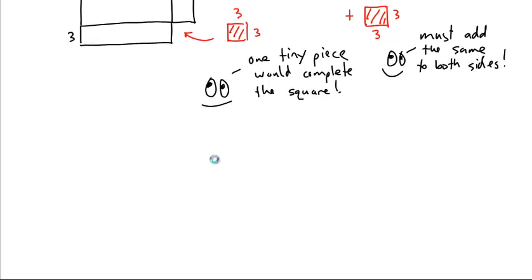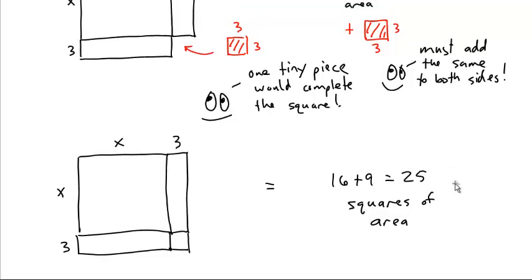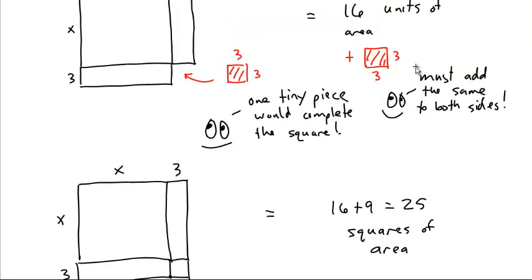That makes the Babylonians very happy. You get a perfect square, x plus three by x plus three square, and you get a total of 25 units of area, the 16 plus the nine.